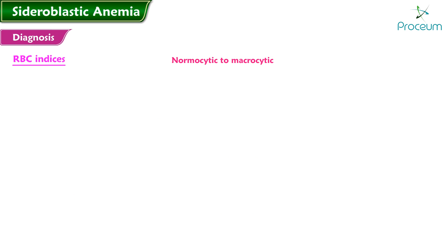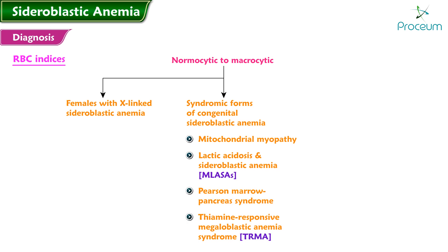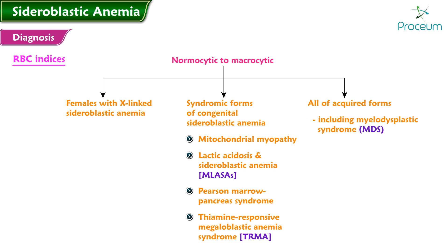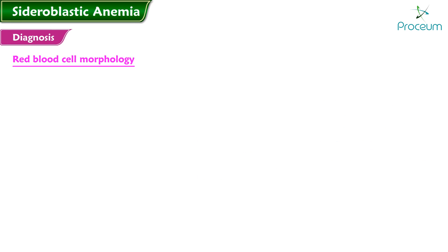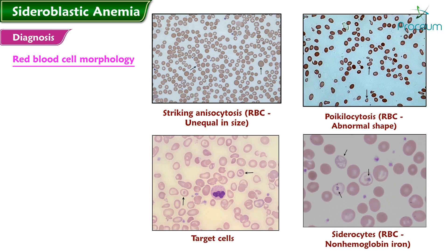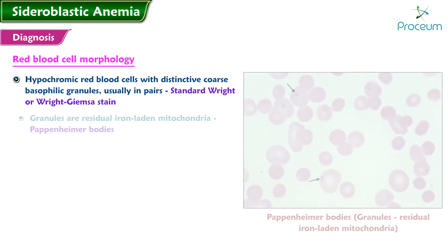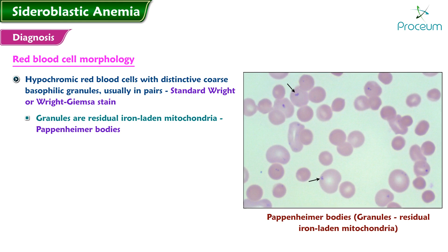The anemia is also microcytic in sideroblastic anemia due to isoniazid. The anemia is normocytic to macrocytic (normal to high mean corpuscular volume) in females with XLSA, in most of the syndromic forms of congenital sideroblastic anemia — mitochondrial myopathy lactic acidosis and sideroblastic anemia, Pearson marrow-pancreas syndrome, and thiamine-responsive megaloblastic anemia syndrome — and in nearly all acquired forms including myelodysplastic syndrome, copper deficiency, and most medication-induced cases. In severe cases, striking anisocytosis, poikilocytosis, target cells, and occasional siderocytes are prominent on blood smear. Hypochromic red blood cells with distinctive coarse basophilic granules, usually in pairs, can be seen on the standard Wright or Wright-Giemsa stain; these granules are residual iron-related mitochondria and stain positive for iron as Pappenheimer bodies.